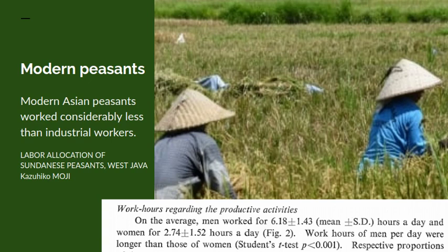Some relatively recent figures done by Japanese social scientists looking at labour allocation of peasants in Java showed that on average men worked 6 hours a day and women 2.7 hours a day. This was only taking into account farm labour — labour to produce a crop — not childcare and domestic labour. But even so, as a comparison with social labour done under capitalism, 6 hours or 2.5 hours is not very much.